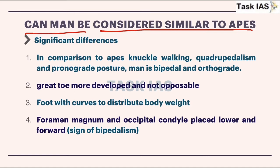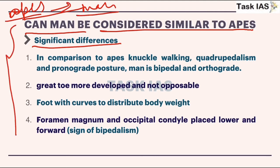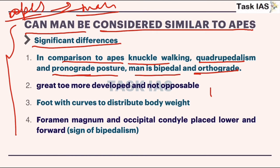Can men be considered similar to apes? The answer is no, because there are significant differences between the structure of apes and humans. There are skeleton changes due to modification of apes' bodies into humans. In comparison to apes, knuckle walking, quadrupedalism, and pronograde posture — man is bipedal and orthograde. The pronograde posture is where the vertebral column and brain are horizontal.